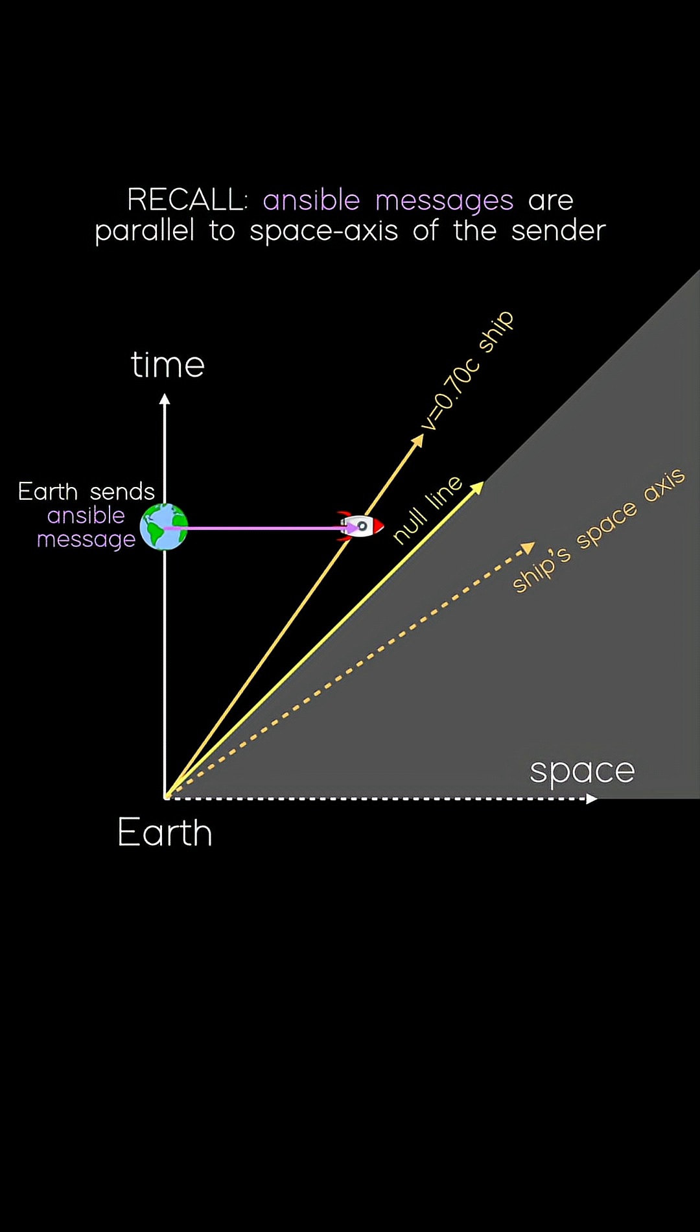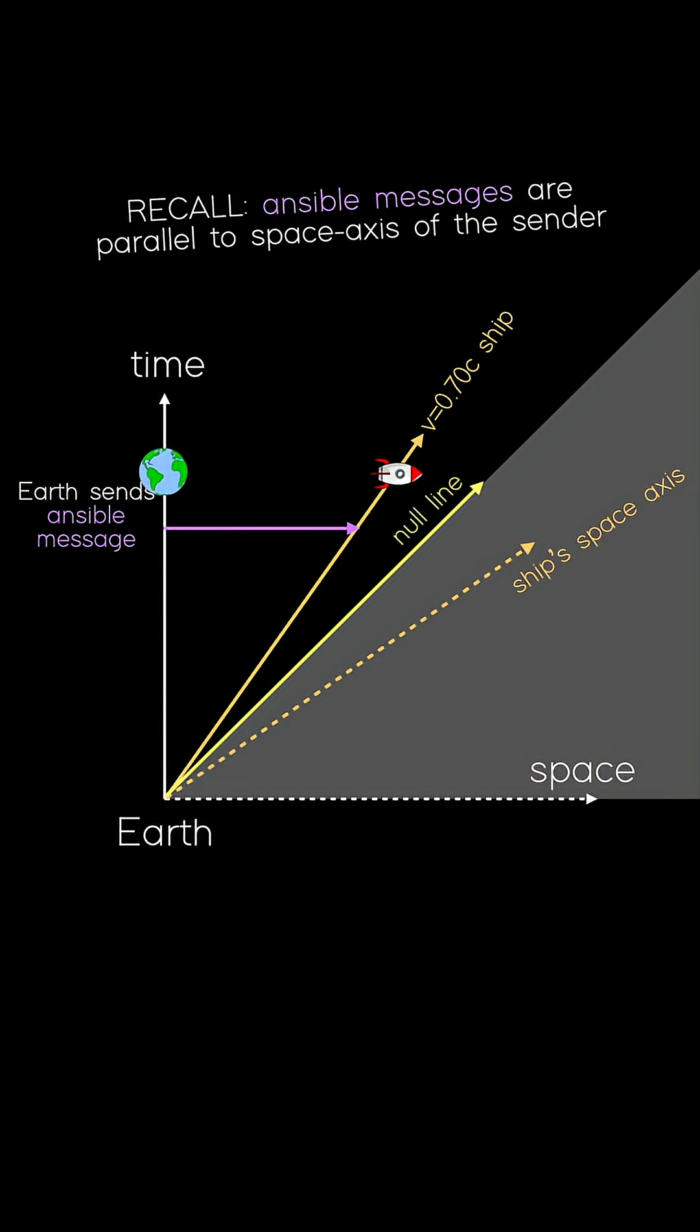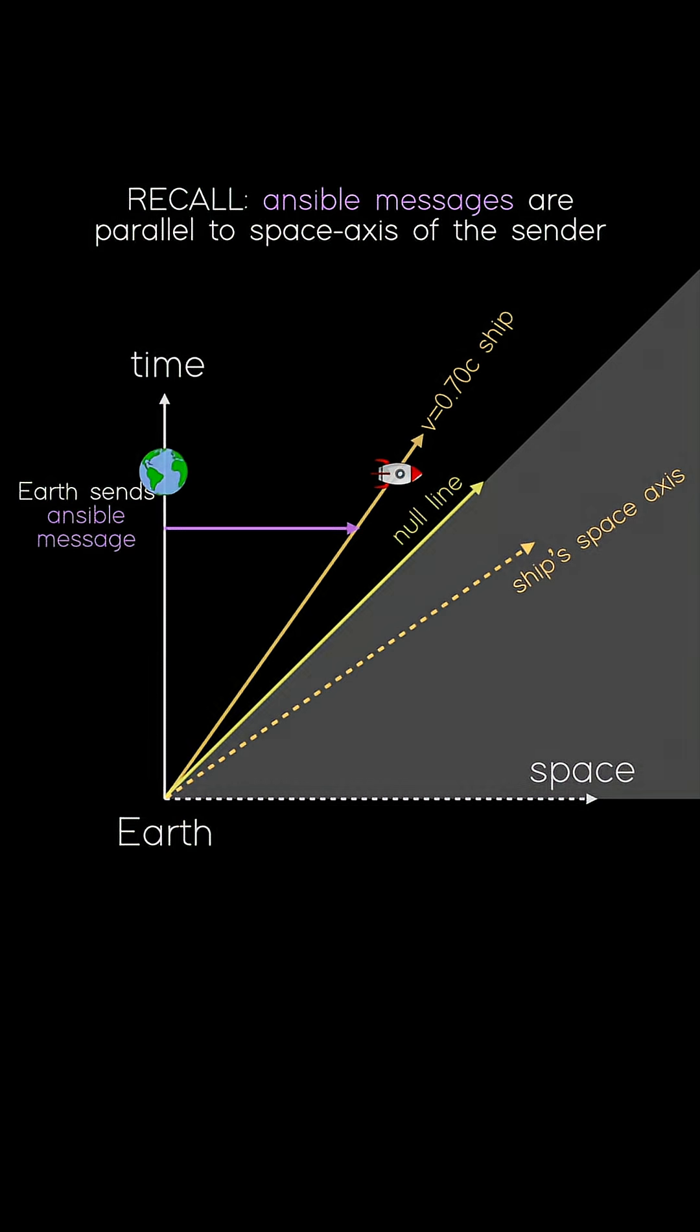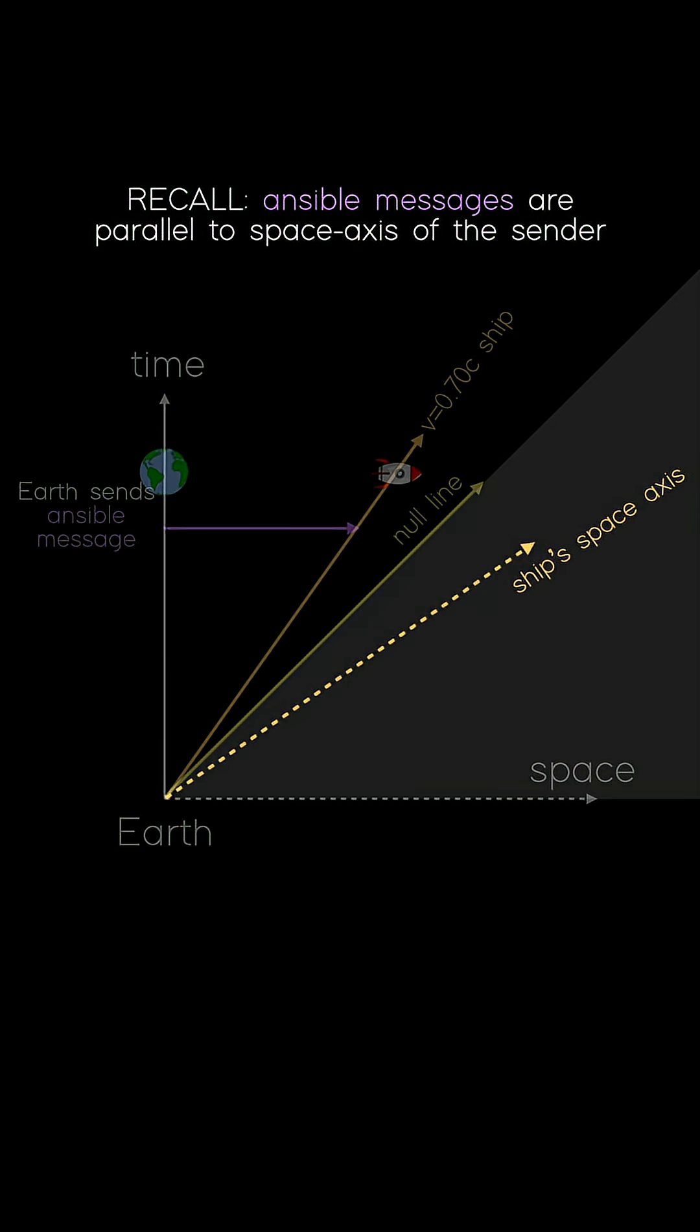After the message is received by the ship's crew, they spend a bit of time thinking about what to say back, and they finally come up with a reply and send it towards the Earth again using an ansible transmitter. Now remember our key rule, ansible messages are parallel to the space axis of the sender, here, the ship. So the reply message has to be parallel to this line.